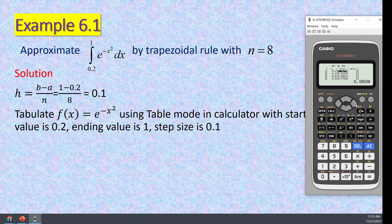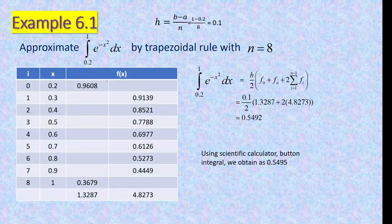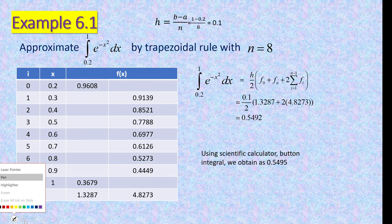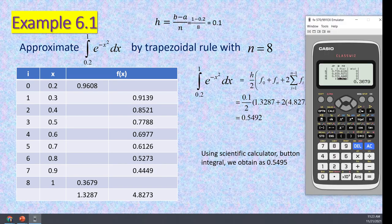The calculator tabulates values from 0.2 with increment 0.1: so 0.2, 0.3, 0.4, 0.5, 0.6, 0.7, 0.8, 0.9, 1.0. You transfer these values to a table on paper, where column i indicates the row number — from i = 0 to i = n = 8.